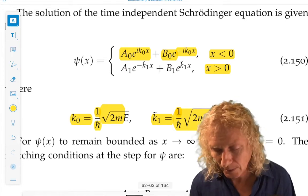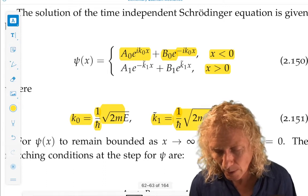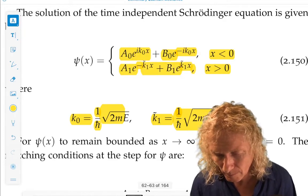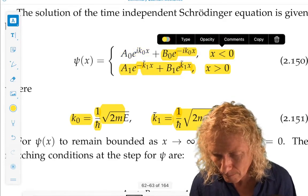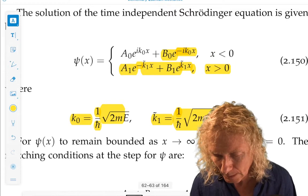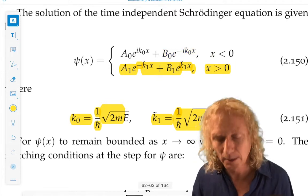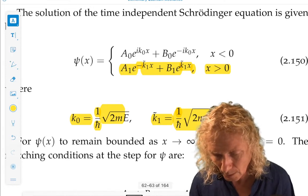Now, in this case, the wave function for x greater than zero is different. It has this exponentially growing and exponentially decaying terms.